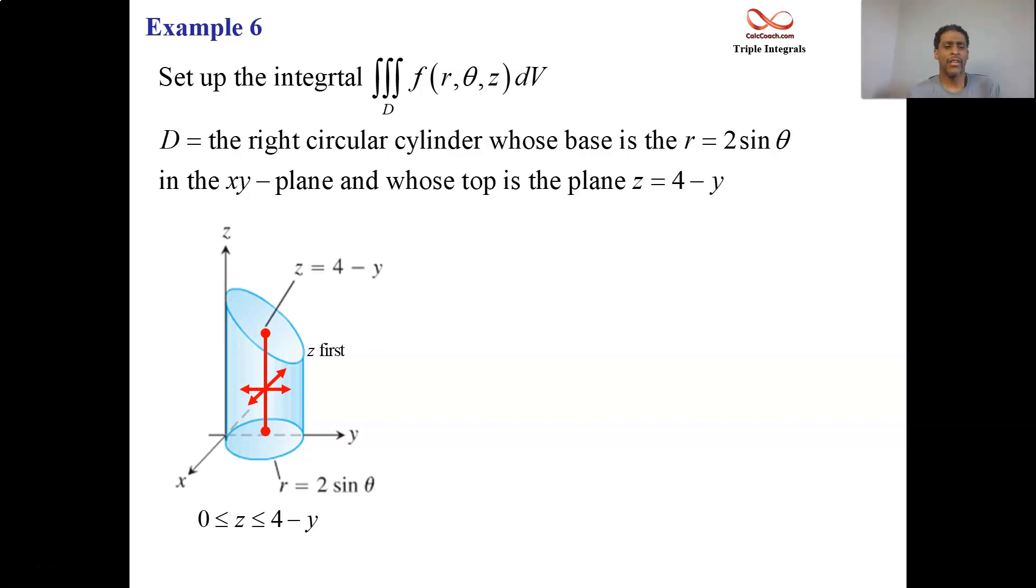So we're sure that we want to do this in cylindrical. Right away, there's something strange about the upper bound on z. It has a name that we can't use in its current format. Z can't be equal to 4 - y. There is no y, not in cylindrical. So we replace y with what y is in polar, which is r sin θ. So z lives between zero and 4 - r sin θ.